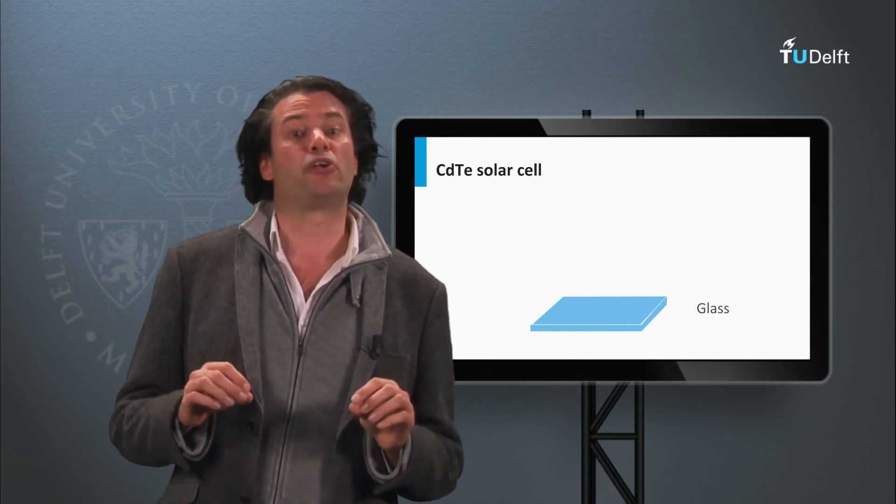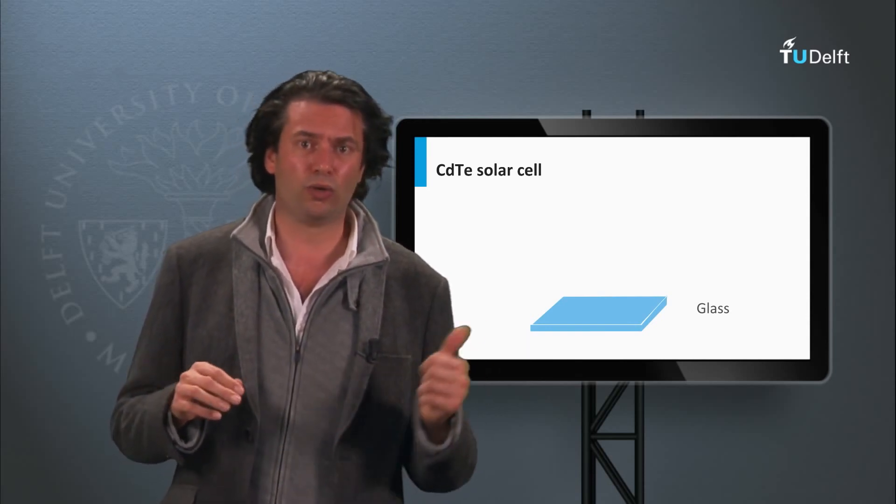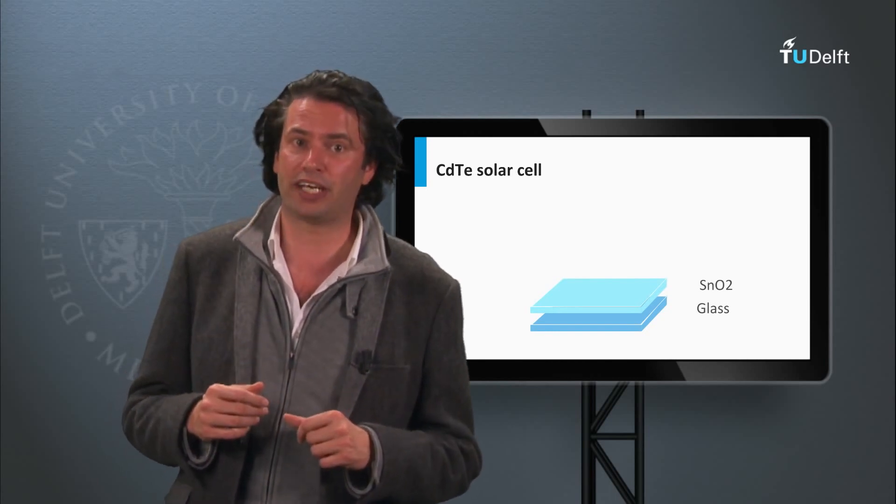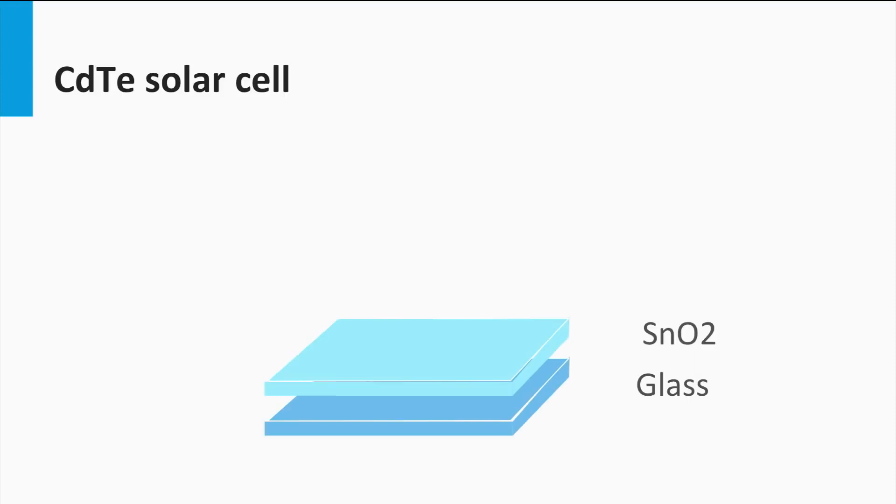The structure of a typical cadmium telluride solar cell looks like this. On a glass, the transparent front contact is deposited. This can be tin oxide or cadmium stannate, which is cadmium tin oxide alloys.